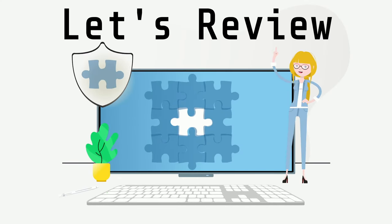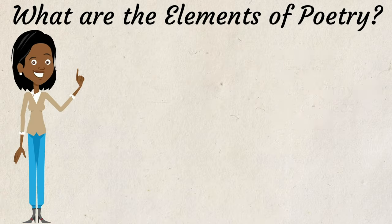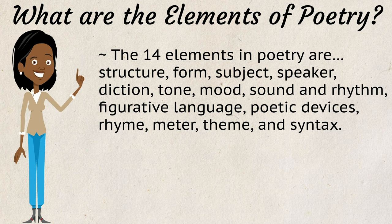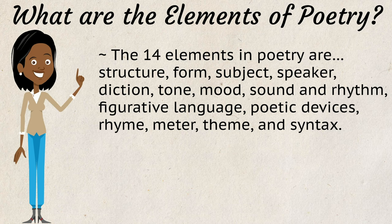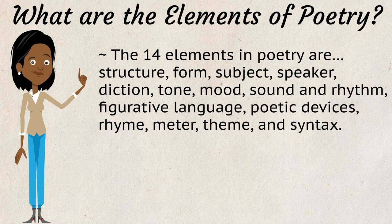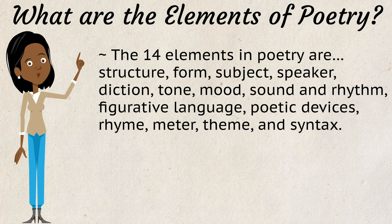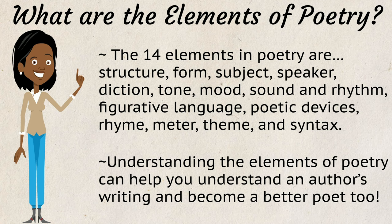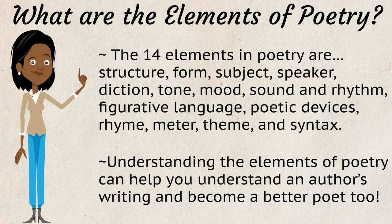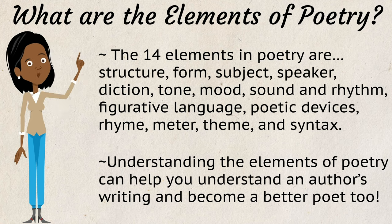Let's review what we have learned. The 14 elements in poetry are structure, form, subject, speaker, diction, tone, mood, sound and rhythm, figurative language, poetic devices, rhyme, meter, theme, and syntax. Understanding the elements of poetry can help you understand an author's writing and become a better poet too.